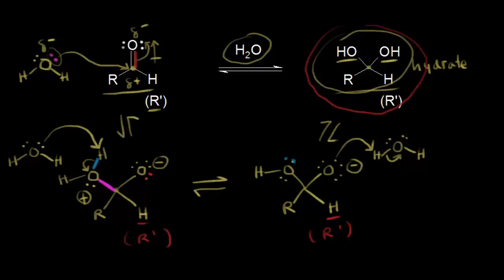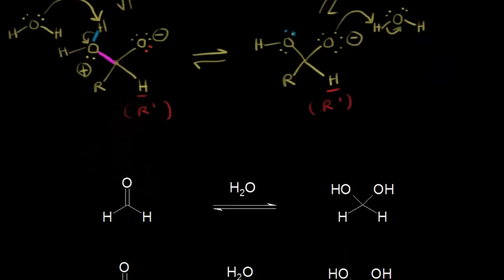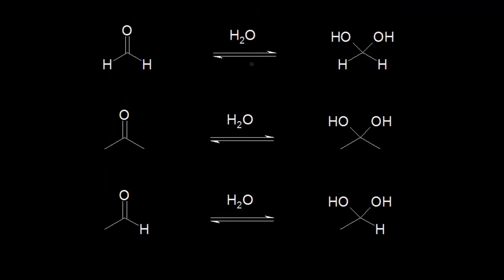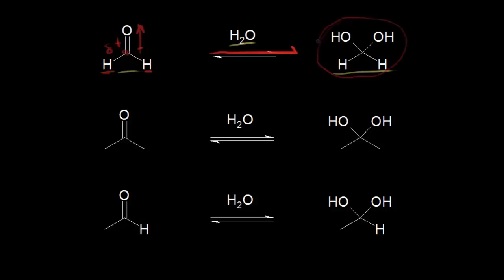That's the general mechanism for the uncatalyzed reaction. It's important to remember that this reaction is at equilibrium. Let's look at three examples. The first example is formaldehyde. If you react formaldehyde with water, you form the hydrate on the right. In this case, the equilibrium is to the right — it favors formation of the hydrate. That's because aldehydes are very reactive: we have a very polarized carbonyl, greater polarization than ketones, and decreased steric hindrance. Because of the high reactivity of aldehydes, the hydrate product is favored.